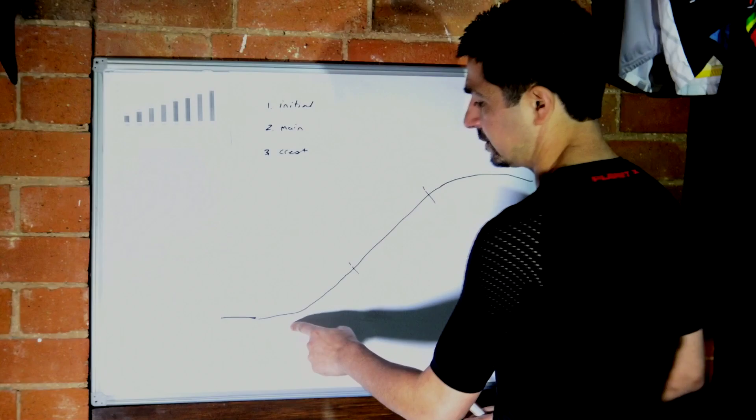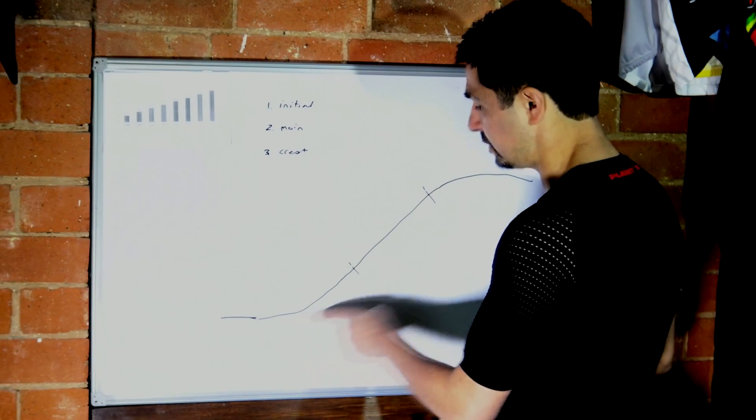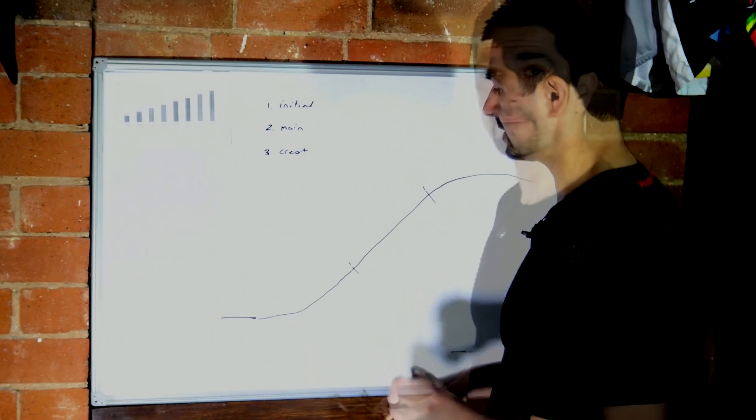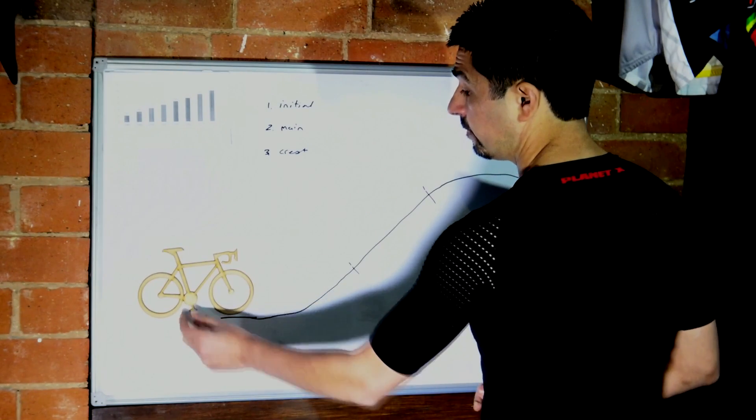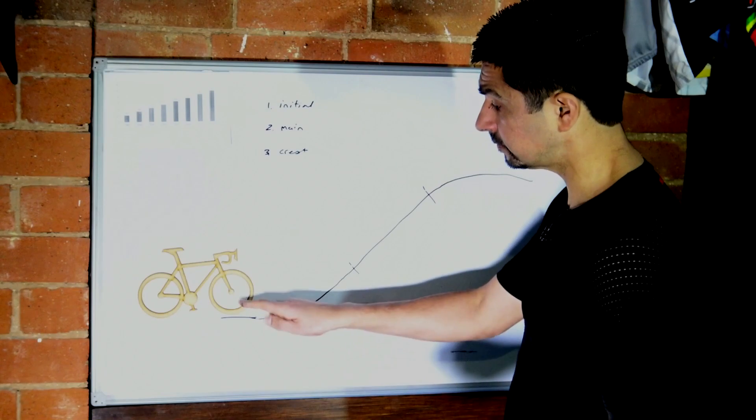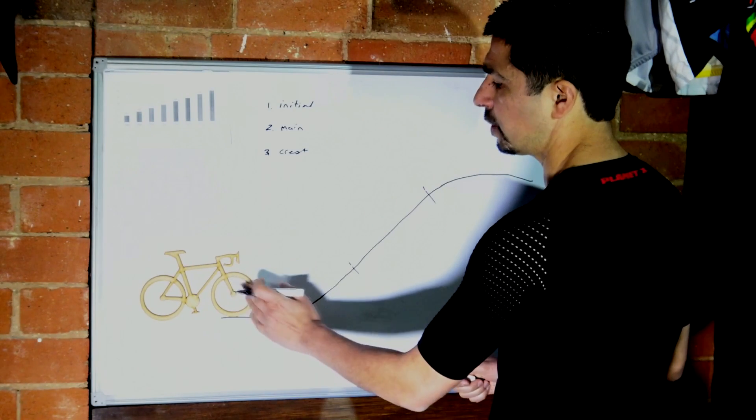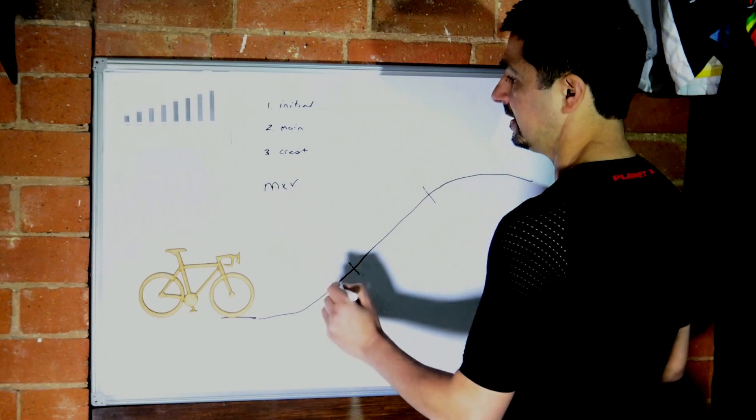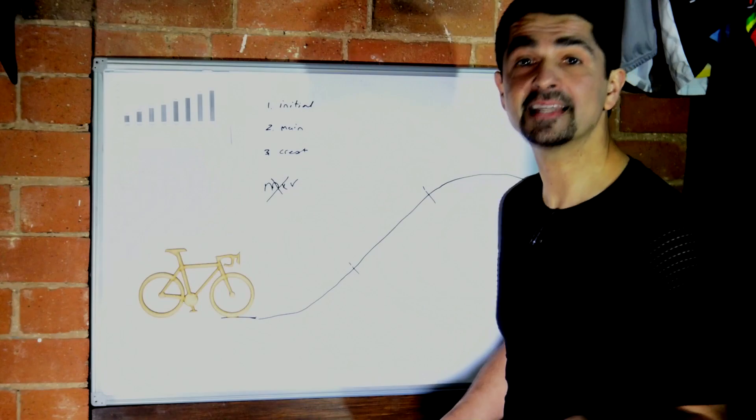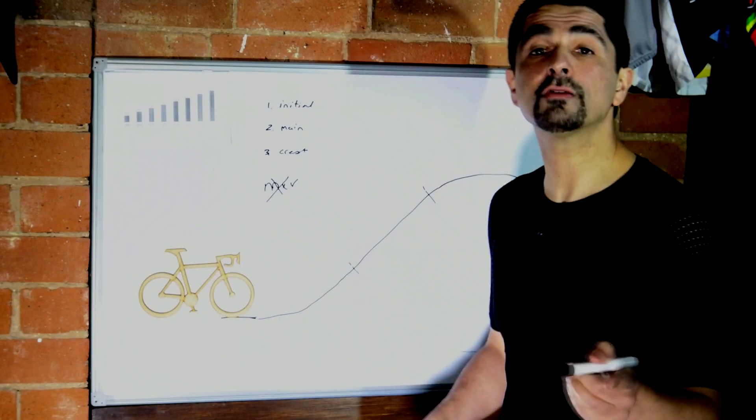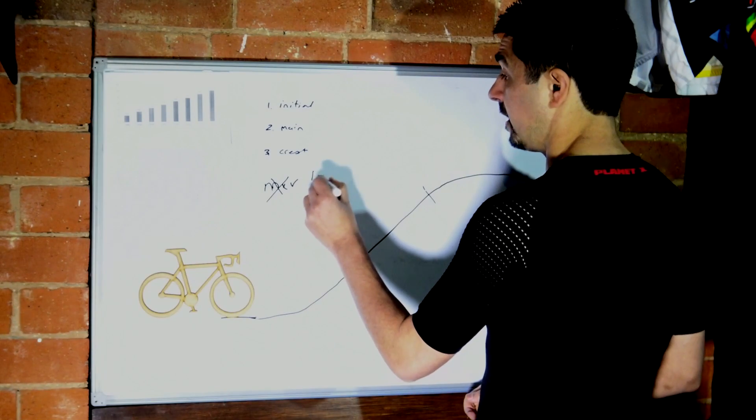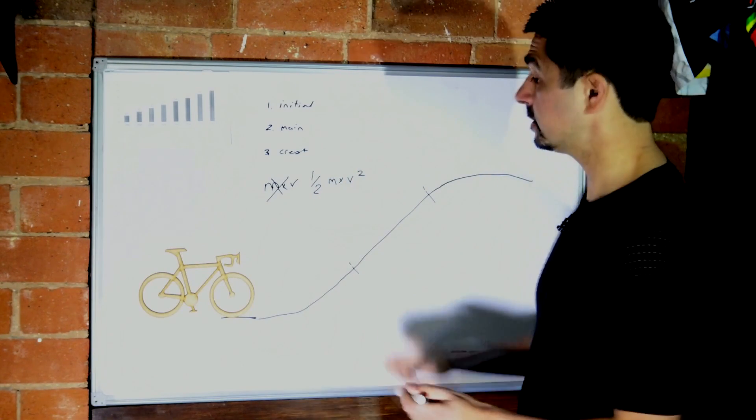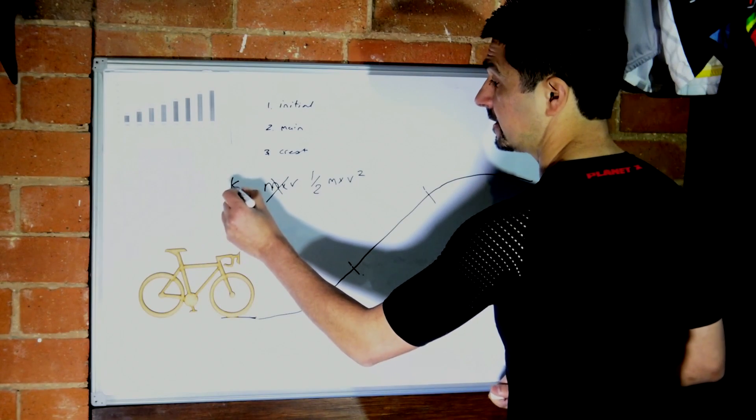So the question is, can we use science to predict what increase in speed will get us up this hill? Well in fact we can, and it's pretty easy. The energy by which you're going along is actually represented not by your momentum, which would be m times v, it's actually represented by your kinetic energy. And that's the old equation from physics: half mass times velocity squared.